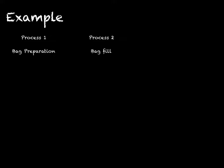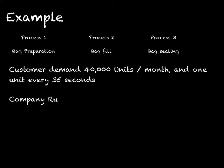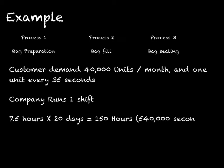Let's do an example. Imagine you have a company that produces bag products. The manufacturing process consists of three processes: bag preparation, bag fill, and bag sealing. If your company works one shift and you have a customer demanding 40,000 units a month, but they also require one unit every 35 seconds — what would the takt time be?